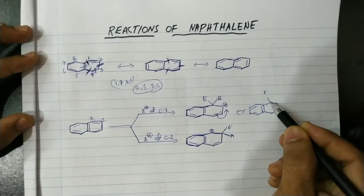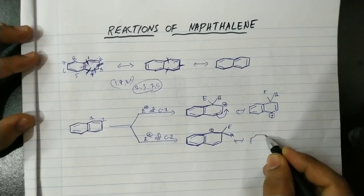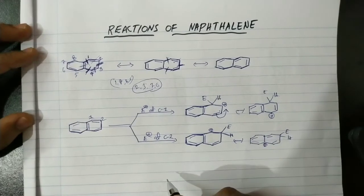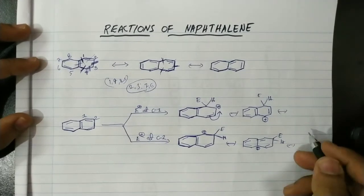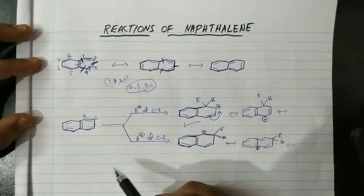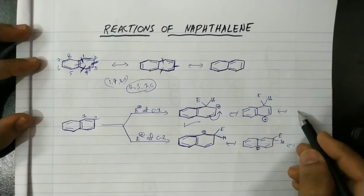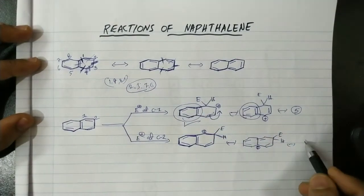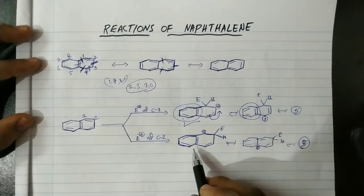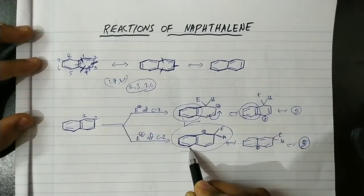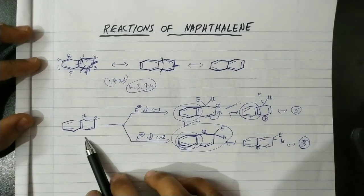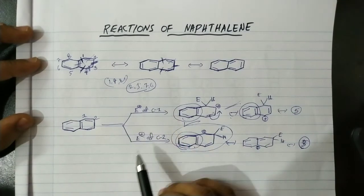When the electrophile attacks, this sigma complex has a positive charge. Writing the resonant structures for attack at C1: among seven resonant structures, two have an intact aromatic benzene ring. For attack at C2: among seven total resonant structures, only one resonant structure retains the aromatic benzene ring. Comparatively, the sigma complex from C1 attack is more stable — that is why the first carbon is the most preferable for electrophilic attack.